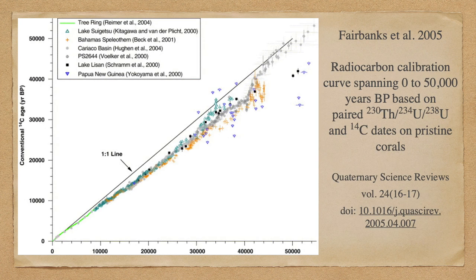Calibration of the radiocarbon time series is an important scientific endeavour undertaken multiple times since the technique's development. Yes, there exists a discrepancy between absolute chronologies and the radiocarbon time series. But for ages less than 30,000 years, this discrepancy is actually extremely systematic, so that once an appropriate calibration correction has been applied to radiocarbon dates, they provide very robust and accurate results.